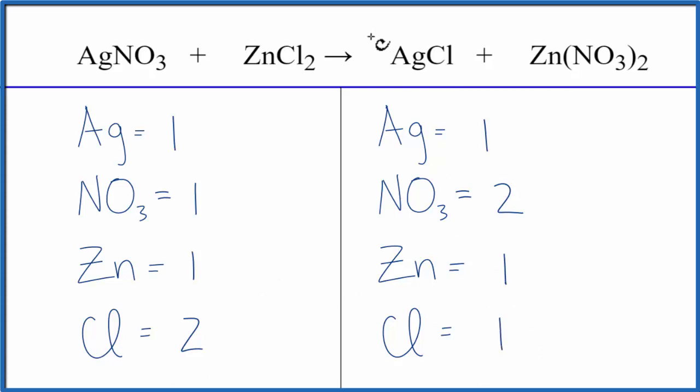Let's fix the chlorines, because we could put a coefficient of two in front of the AgCl. One chlorine times two gives us two of those, so the chlorines are balanced.